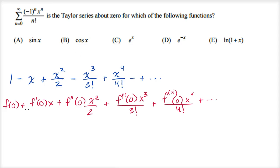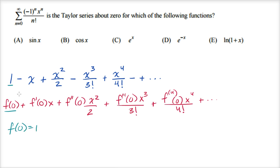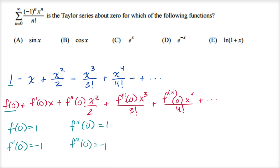To figure out which function this is, we match coefficients. f(0) must equal one. f'(0) must equal negative one — the coefficient on x. The second derivative at zero must equal one — the coefficient on x²/2. And the third derivative at zero must equal negative one — the coefficient on x³/3!.